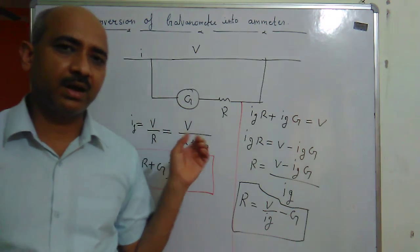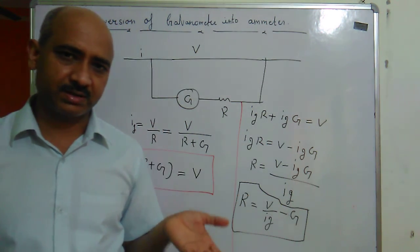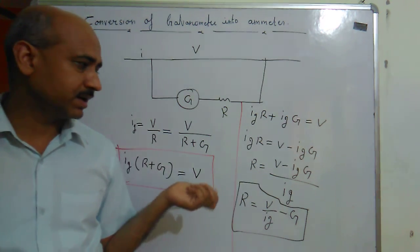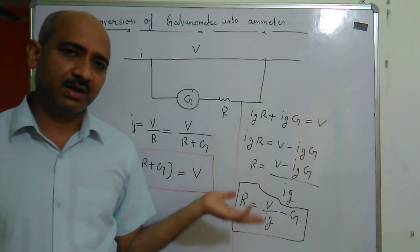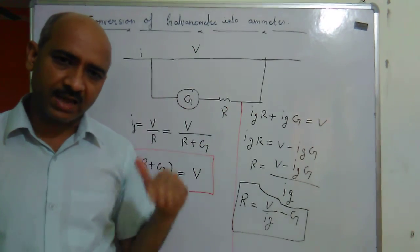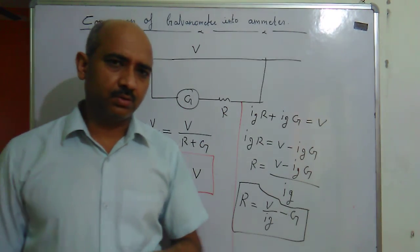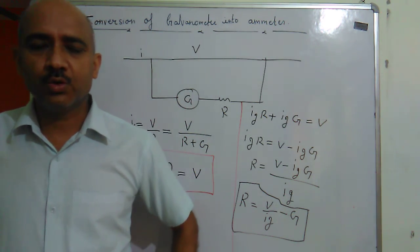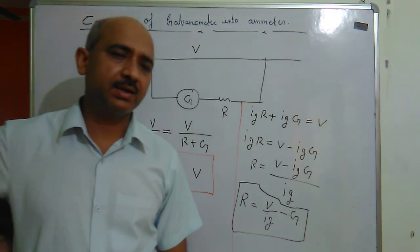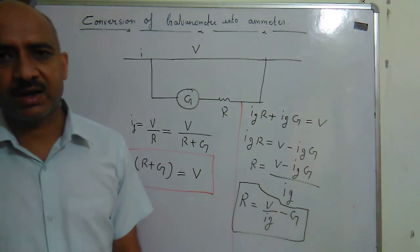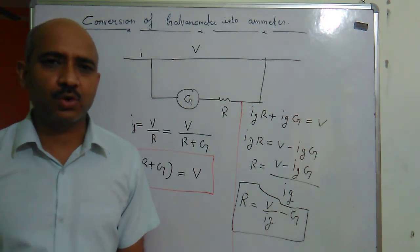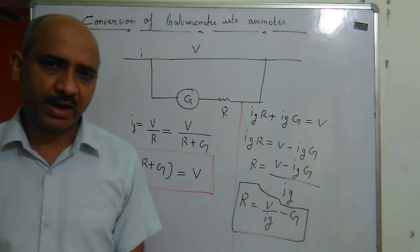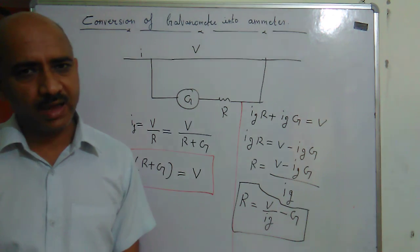In this way we can convert a galvanometer into an ammeter and also into a voltmeter. These two are the last topics of this chapter. From tomorrow we will either start a new chapter or discuss a few questions from this chapter. So for today, only this much. Thank you very much.